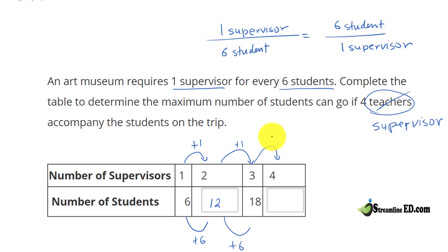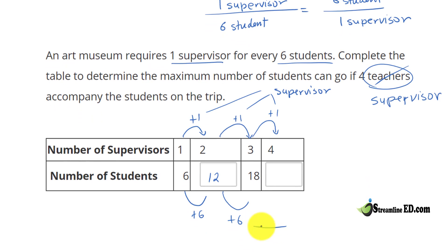Then we add another supervisor. Remember these right here are supervisors, and here we have students. What's eighteen plus six? Eighteen plus six gives us twenty-four. So what's the maximum number of students that can go on a field trip with four teachers? Twenty-four.